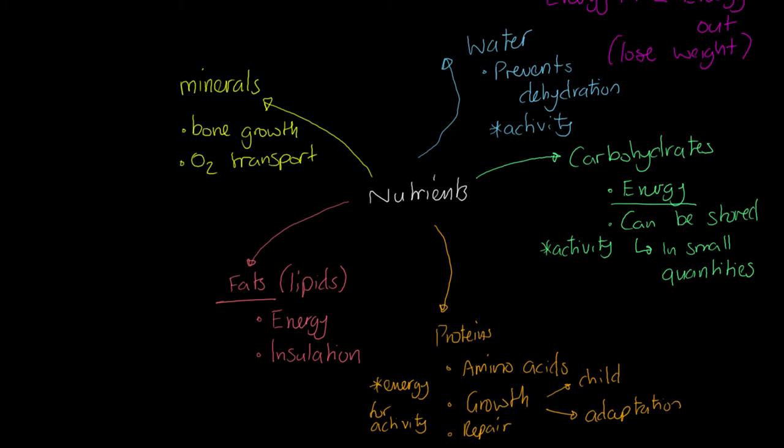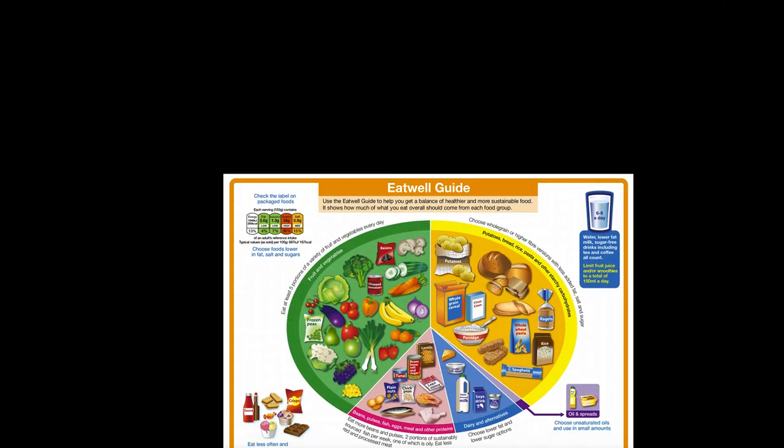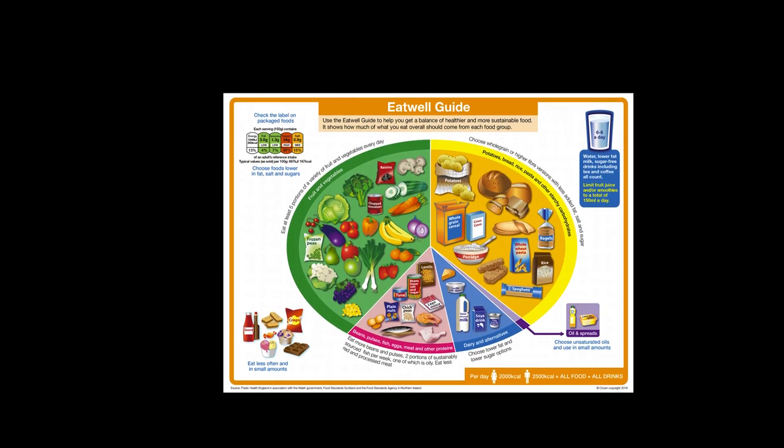Now, the only thing I want to finish off with here, guys, is I want to take us down to this image of the Eat Well plate and just give you some examples of where we might get things from. So let's take our carbohydrates first. Well, we get them from bread, from potatoes, from grains, from pasta, and so on. So that's where we get our carbs from.